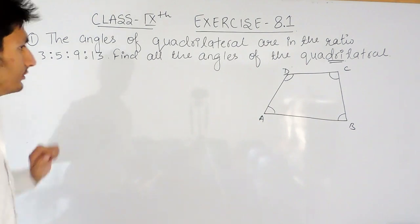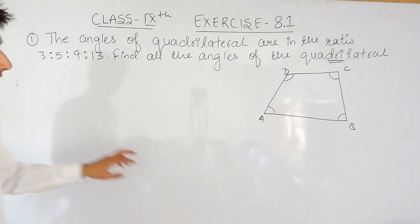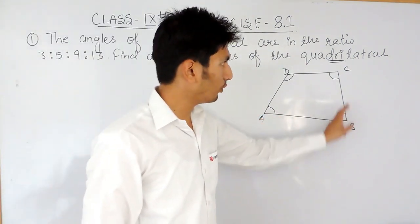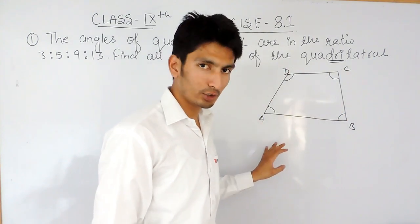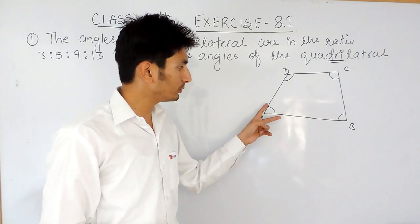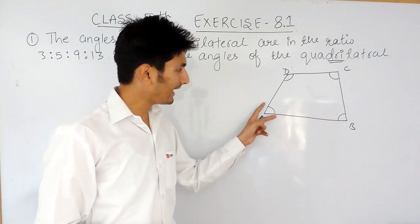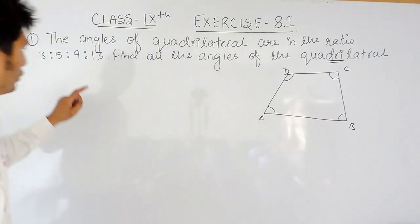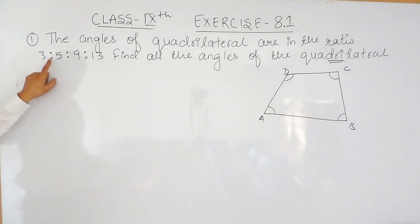Now, the first thing is, if the ratio between these 4 angles is given to you, then if you want to find the value of this angle, in that case you have to remove the ratio and you have to multiply these numbers with a variable.